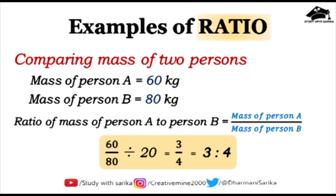But 60 divided by 80 is not the final answer because the ratio must be in its simplest form. 60 and 80 are both divisible by 20, which is their highest common factor. After simplifying, we get 3 upon 4. Since 3 and 4 are co-prime numbers, it cannot be simplified further. The final answer written as a ratio is 3 colon 4. This is how we compare the mass of two persons — 3 is to 4.